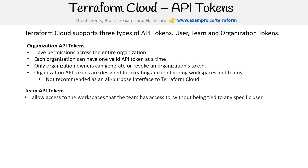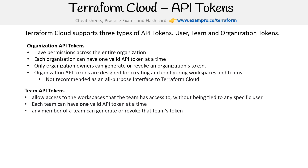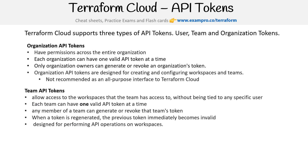Then you have team API tokens. This allows access to workspaces that the team has access to without being tied to any specific user. Each team can have one valid API token at a time, and any member of a team can generate or revoke that team's token. When a token is regenerated, the previous token immediately becomes invalid. It's designed for performing API operations on workspaces at the same access level the team has. I would imagine this is when you're setting up your own custom CI/CD pipelines or something like that — I'm not really sure exactly the use case for team API tokens.